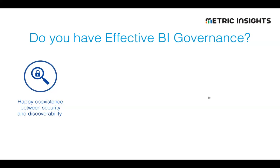In a well-governed environment, users can find content — not only content they have access to, but they're able to see content they don't have access to and request it. That's important from a governance perspective because if something exists that's close to what I'm looking for, I can request access rather than going off and building a near-duplicate, wasting a lot of effort.